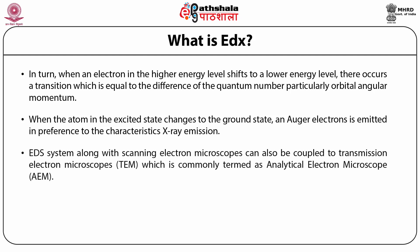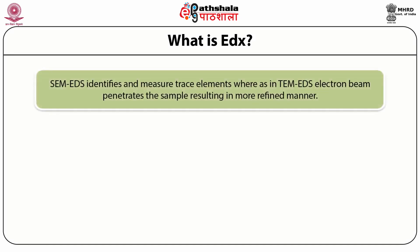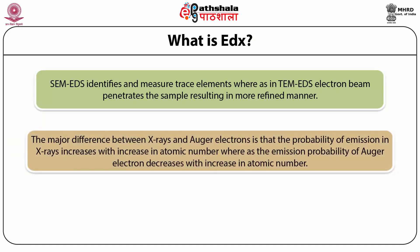The EDX system along with the scanning electron microscope can be coupled to the transmission electron microscope, commonly termed as the analytical electron microscope. The basic principle in both cases is the same. SEM EDS identifies measured trace elements, whereas in TEM EDS, the electron beam penetrates the sample resulting in a more refined analysis. The major difference between x-ray and Auger electron emission is that the probability of x-ray emission increases with increasing atomic number, whereas the emission probability of Auger electrons decreases with increasing atomic number.